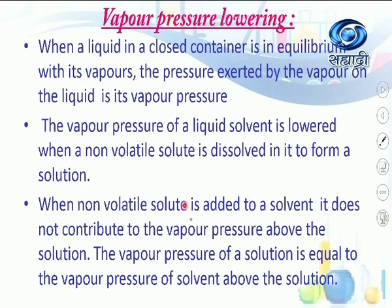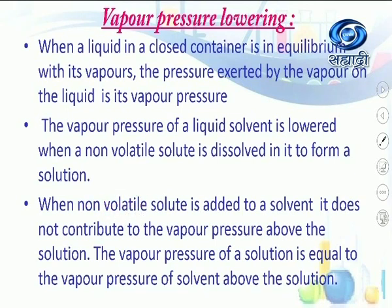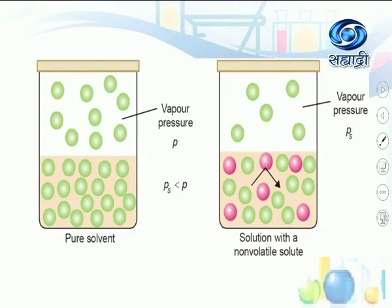When a non-volatile solute is added to a solvent, it does not contribute to the vapor pressure above the solution. Because of this, the vapor pressure of the solution is equal to the vapor pressure of the solvent above the solution. We can show this diagrammatically.